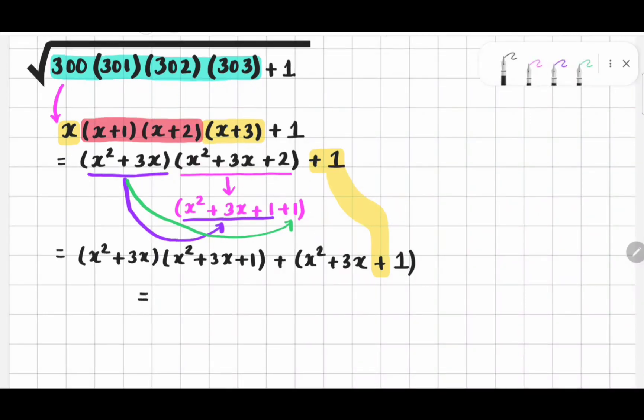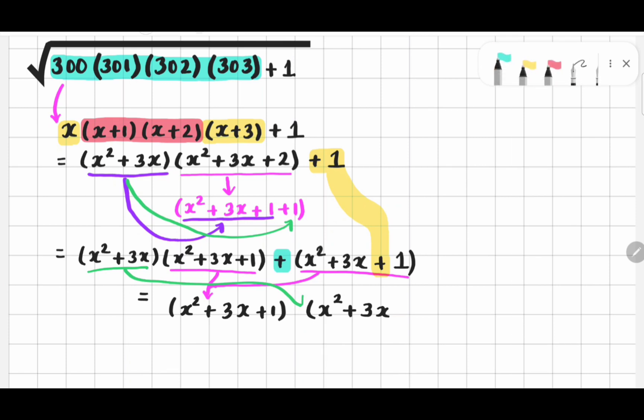Now, I am going to take common factor out. Here we have x square plus 3x plus 1. So the remaining factor will be x square plus 3x. And thankfully, we have plus 1 here.